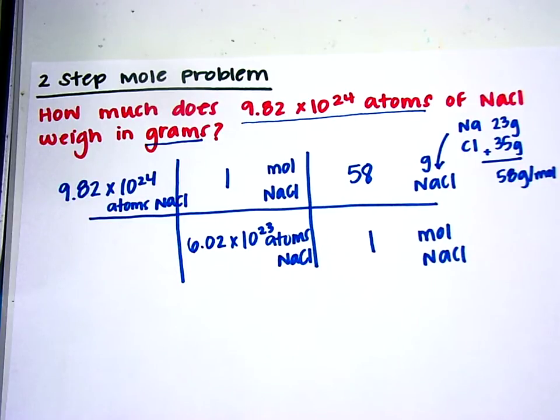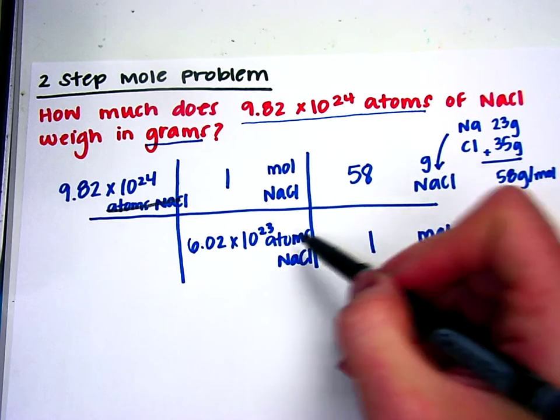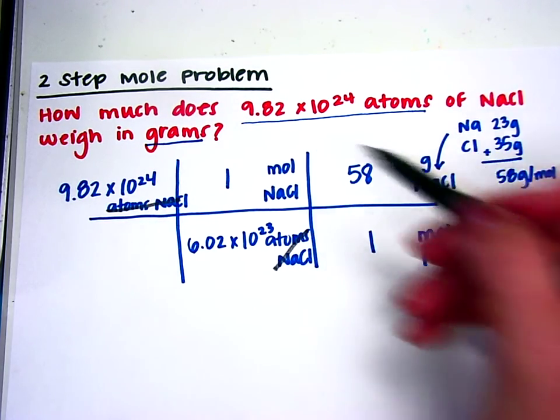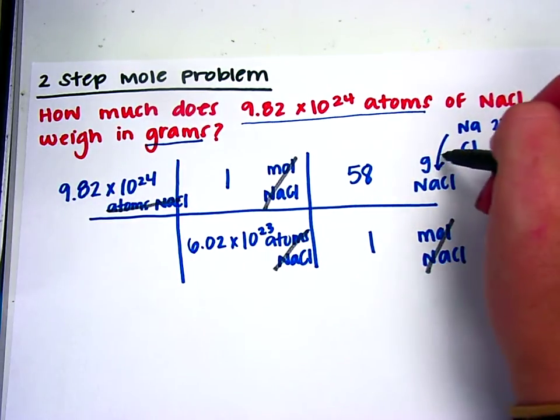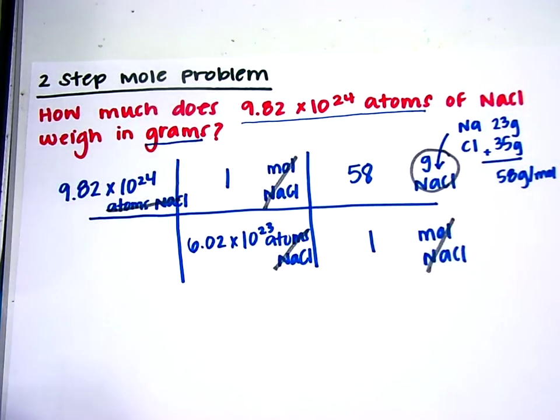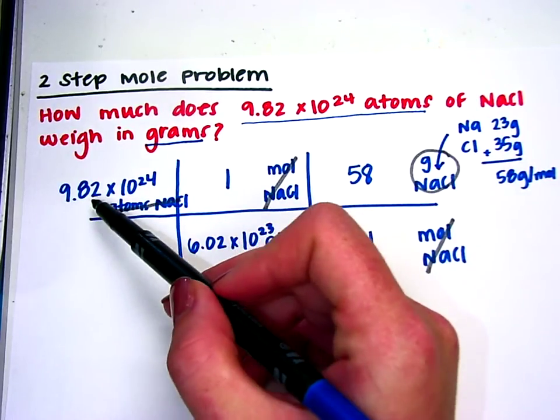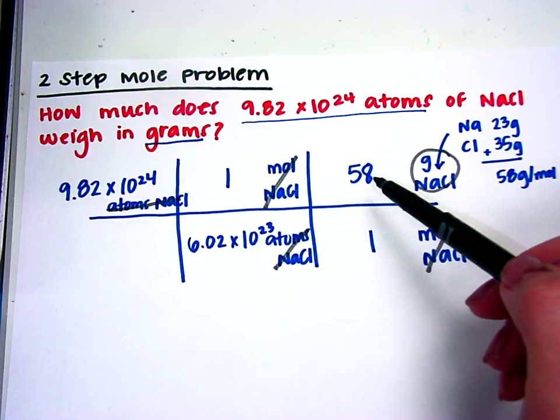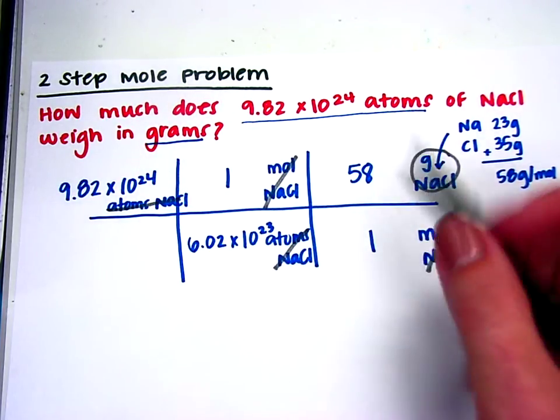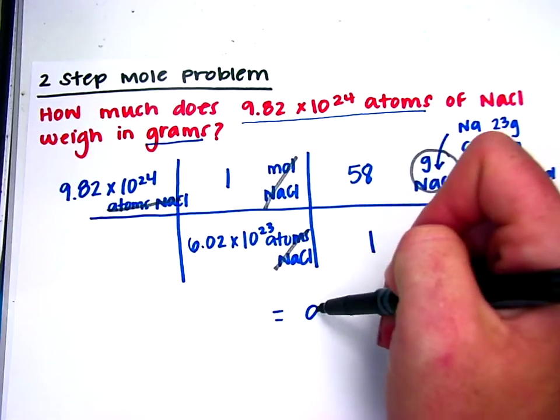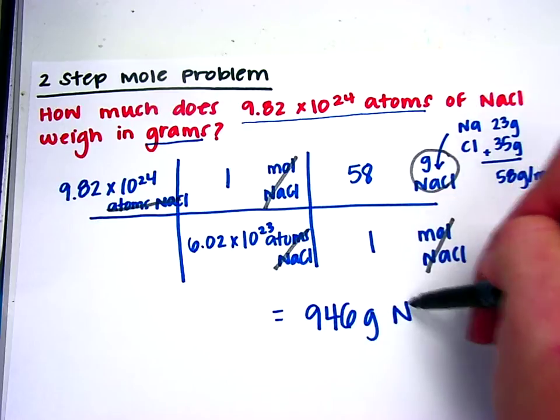Your next thing that you want to do is to cancel out your units. So atoms of NaCl is on the top and on the bottom. Moles of NaCl is on the top and on the bottom. And I'll be left with grams of NaCl. You multiply everything on top. So I'll do 9.82 times 10 to the 24th times 58, and I'll divide that number by 6.02 times 10 to the 23rd. If you type your math into the calculator correctly, you'll get 946 grams of NaCl.